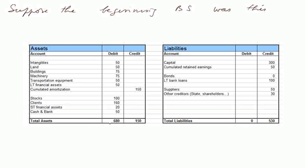Looking at the assets and liabilities: on the liabilities side we already had cumulated retained earnings of 50, capital of 300, a loan of 100, and various things due to suppliers. On the assets side, fixed assets include machinery, a van, long-term financial assets, buildings, land, and intangibles — which are essentially related to the cost at the foundation of the firm and things like patents, which we shall study later. In the current assets, we have stocks of 100, clients of 160, short-term financial assets, and cash and bank lumped together at 50. So we have a net debit of 530 and a net credit of 530.